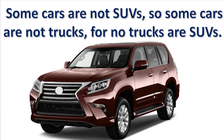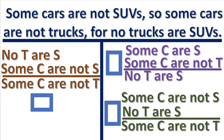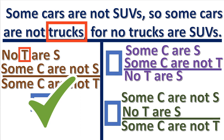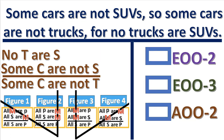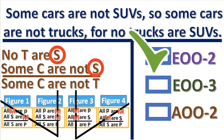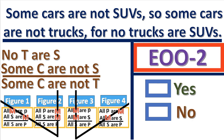Practice problem number one: symbolize this syllogism and then choose the correct standard form. The predicate of the conclusion is in the first premise, and the subject of the conclusion is in the second premise. Next, what is the form of the syllogism? The position of the middle term is on the right, so it's figure two.